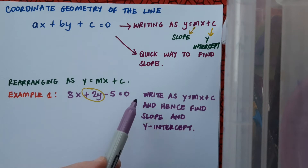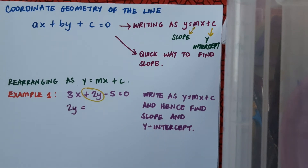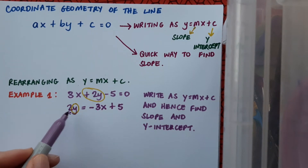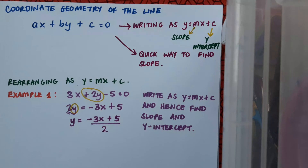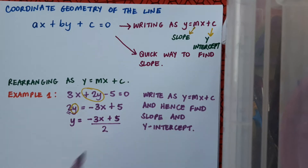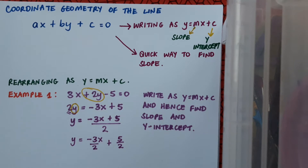So I'm going to leave the 2y where it is and bring the other two terms across the equal sign to the right-hand side. So I'll have 2y equals, then 3x goes across and becomes minus 3x, and minus 5 goes across and becomes plus 5. I just need to get the y by itself now, so I take the 2 — which is the coefficient of y, so it's multiplying — and when it goes across it needs to divide everything on the right-hand side. So I'll write that as y equals minus 3x plus 5 over 2, and then split the fraction: y equals minus 3 over 2 x plus 5 over 2. Doing this makes it really clear what the slope and y-intercept are.